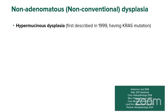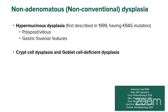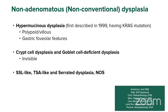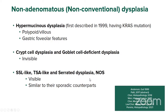Hypermucinous dysplasia was first described in 1999 and is uncommon. These lesions are often polypoid, but a subset may present as flat lesions on random biopsy. Characteristically, they have gastric foveolar-type mucous features. Crypt cell dysplasia and goblet cell deficient dysplasia are usually invisible — not typically described as endoscopically visible lesions. Serrated dysplasias include SSL-like (sessile serrated lesion), traditional serrated adenoma-like, and unclassifiable. Serrated lesions are mostly visible and in studies appear similar to their sporadic counterparts. A 2021 paper from Dr. Choi's group found that these non-conventional dysplasias are more frequently associated with advanced neoplasia than conventional dysplasia — a pretty significant finding.